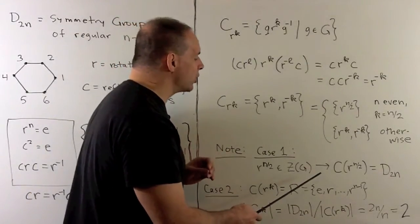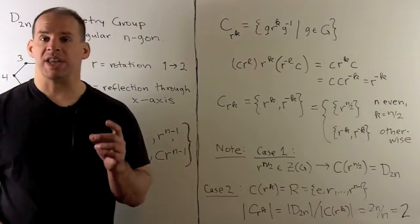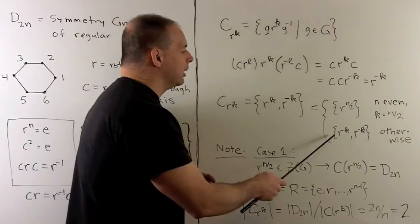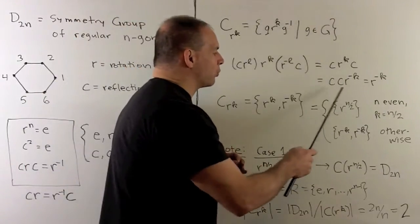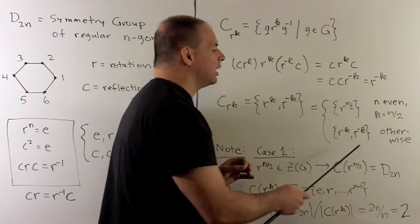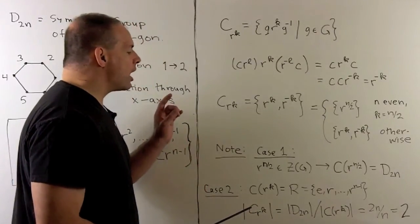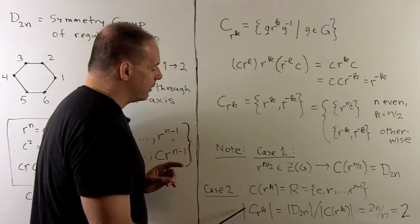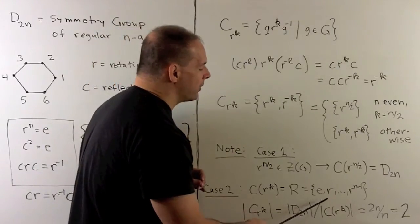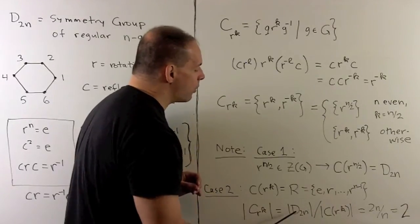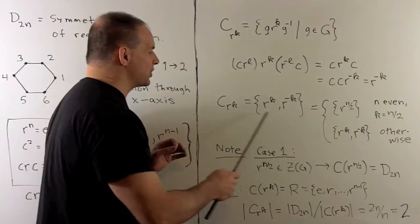For the second case, here we have a rotation. If we're not looking at the rotation that's in the center, then the centralizer here is just the rotation subgroup. If we check the cardinality equation, we have number of elements in the class equals order of the group divided by the number of elements in the centralizer. We expect to get 2n over n or two elements out, and that checks out.